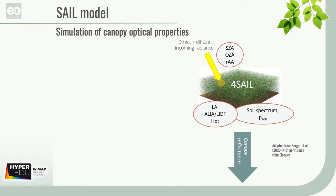One of the earliest canopy reflectance models, developed in the 1980s, is the Scattering by Arbitrary Inclined Leaves model, or SAIL for short. SAIL provides four stream optical properties — nine in total — of the canopy layer in the output. Some subversions have been developed describing vertically heterogeneous canopies or multiple layers. The current version constitutes a numerically robust and speed-optimized version of the model.